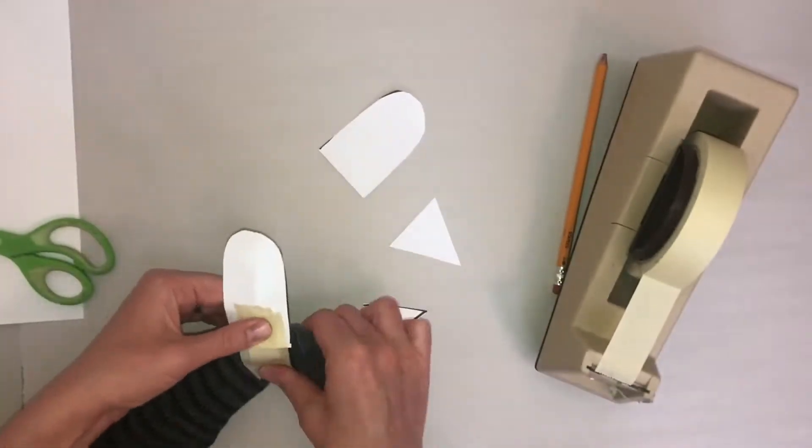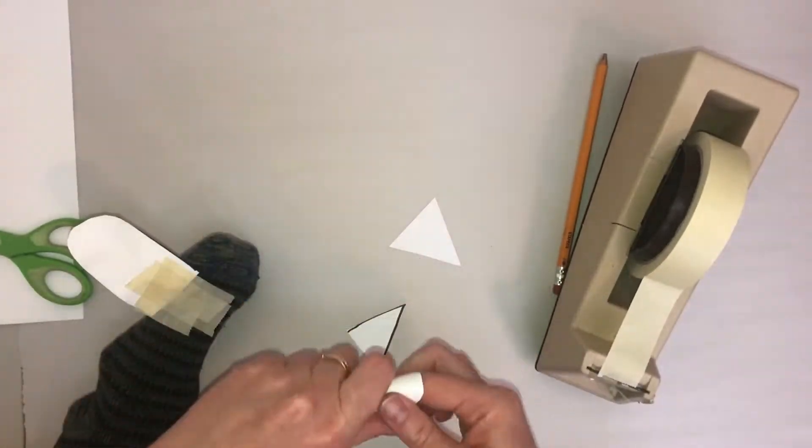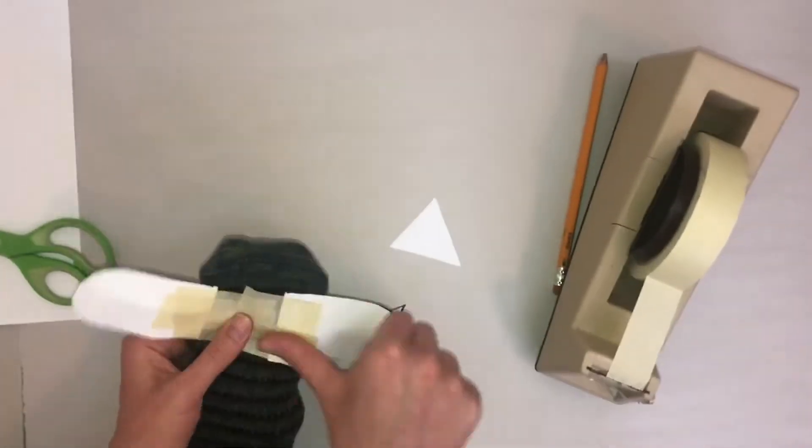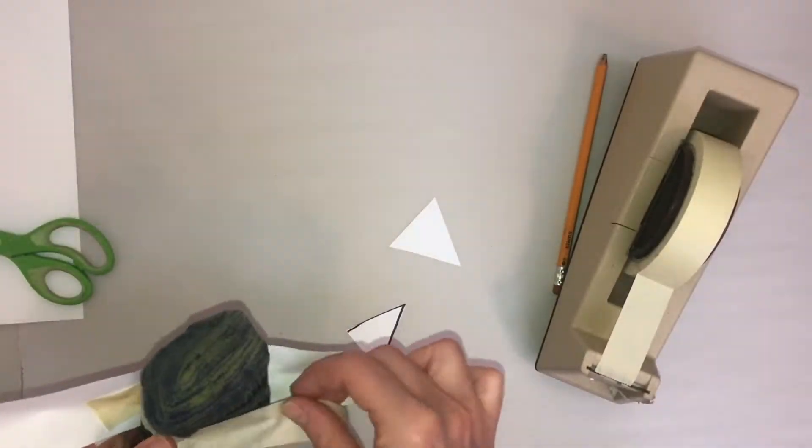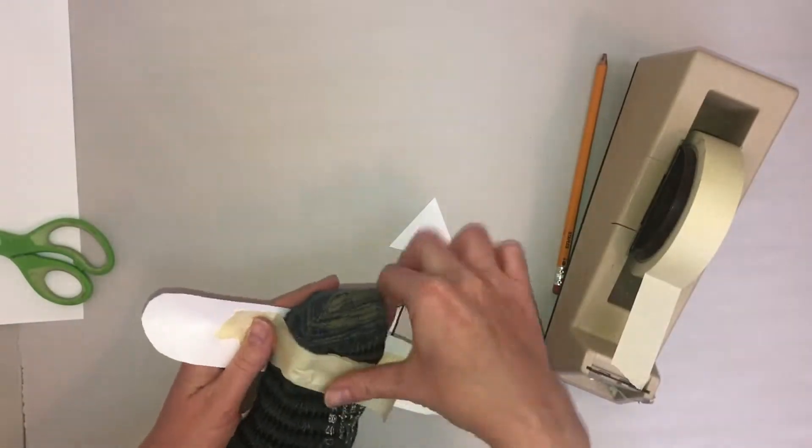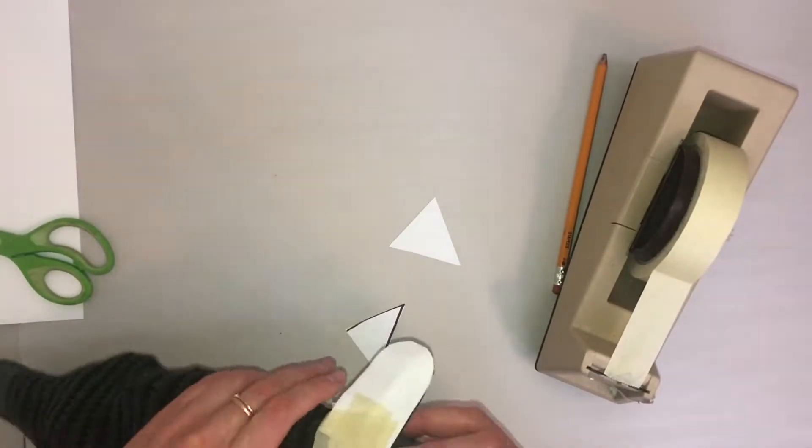Take some tape and tape it onto your sock. Make sure you use a lot of tape so it doesn't fall off. And turn the sock over and tape the underside as well. You really want the ears to be taped on.